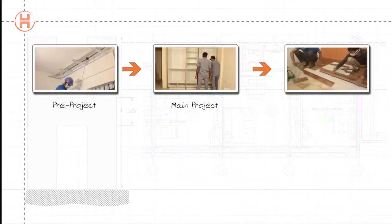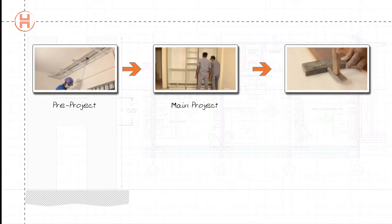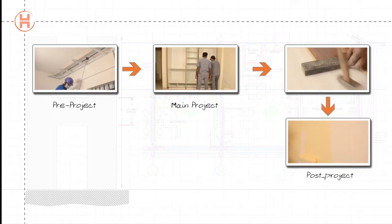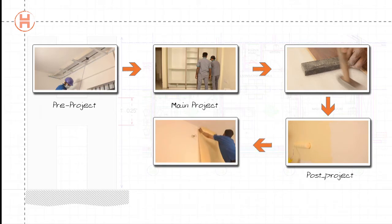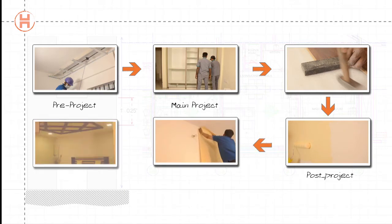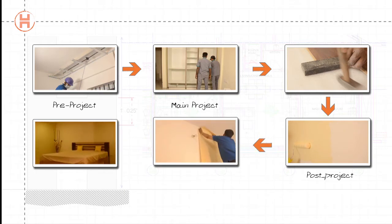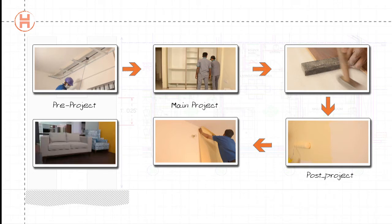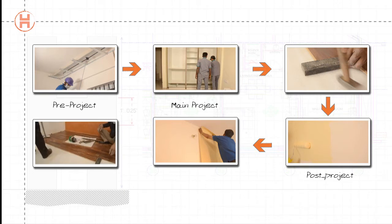After the main project execution, that is, post-project, wall painting is done. Wallpaper is applied, bedding is delivered and positioned, and sofa seating is delivered and positioned.